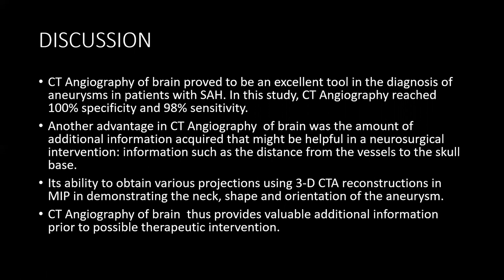Discussion: CT angiography of the brain proved to be an excellent tool in the diagnosis of aneurysms in patients with subarachnoid hemorrhage. In this study, CT angiography achieved 100% specificity and 98% sensitivity. An additional advantage was the wealth of supplementary information acquired helpful for neurosurgical intervention, including the distance from vessels to the skull base and clinoid process, and the ability to obtain various projections using 3D CT reconstructions with MIP, demonstrating the neck, shape, and orientation of the aneurysms.